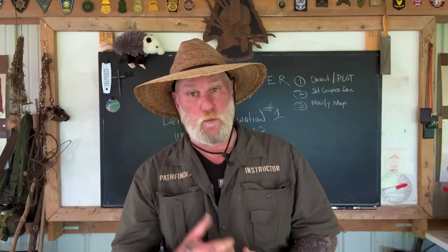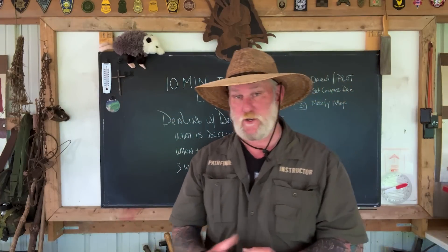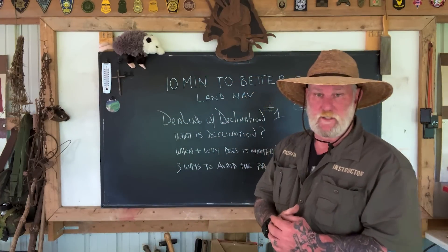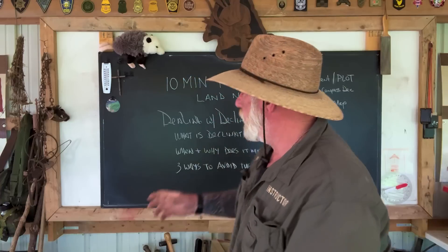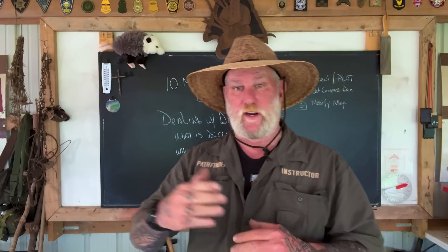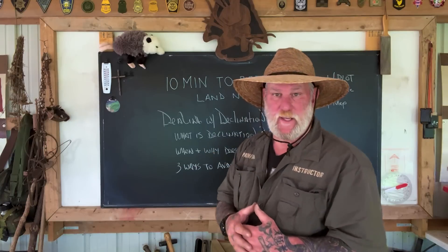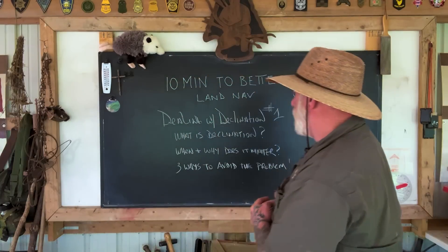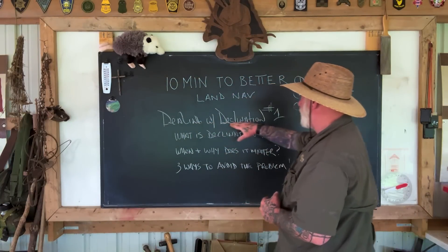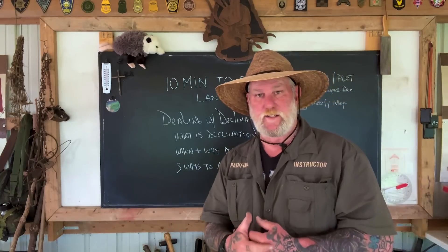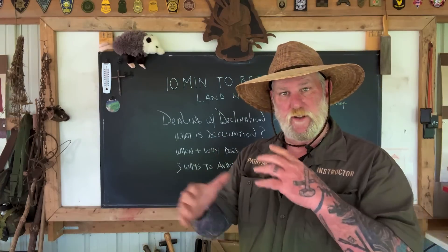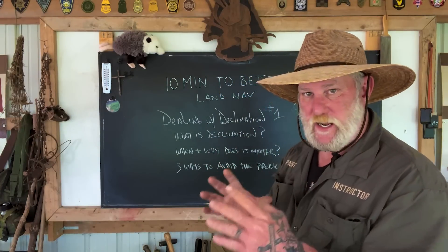I'm Dave Canterbury with Self Reliance Outdoors and the Pathfinder School, back down here at the Pathfinder Outdoor Classroom, back in our series 10 Minutes to Better Land Navigation. What we're going to talk about today is we're going to start learning to incorporate a map into our navigational tools. This is going to be dealing with declination, part one, because it's going to take me two parts to cover this whole subject and make it easily understandable.